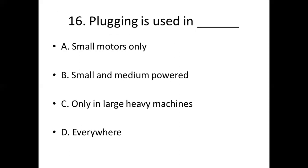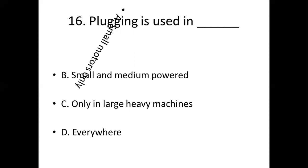Sixteenth bit. Plugging is used in dash. Option A: small motors only. Option B: small and medium powered motors. Option C: only in large heavy machines. Option D: everywhere. Answer: Option A, small motors only.